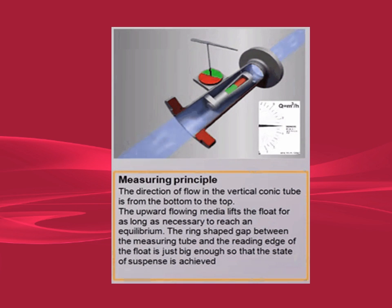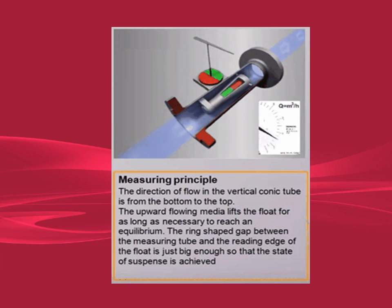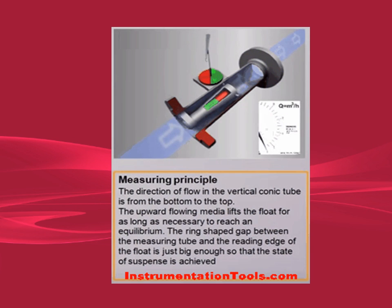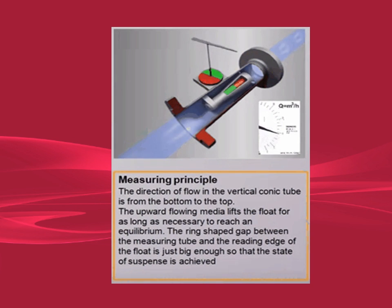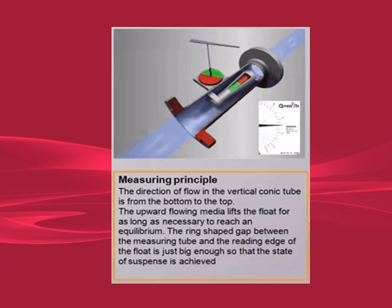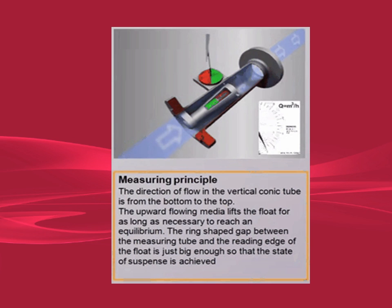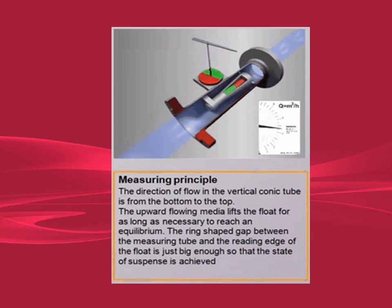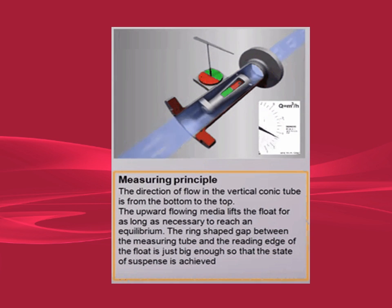The drag force for a given fluid and float cross-section is a function of flow speed squared only. A higher volumetric flow rate through a given area increases flow speed and drag force, so the float will be pushed upwards. However, as the inside of the rotameter is cone-shaped and widens, the area around the float through which the medium flows increases, and the flow speed and drag force decrease until there is mechanical equilibrium with the float's weight.